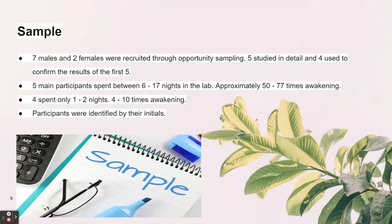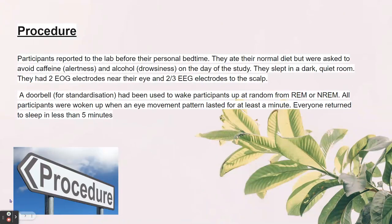The sample was pretty small — seven males and two females — recruited through opportunity sampling. Five participants were studied in detail, and four were used just to confirm the results of the first five. The five main participants spent between 60 to 70 nights in the lab, with approximately 50 to 77 awakenings. The other four spent only one to two nights with four to ten awakenings. Participants were identified by their initials to keep them confidential.